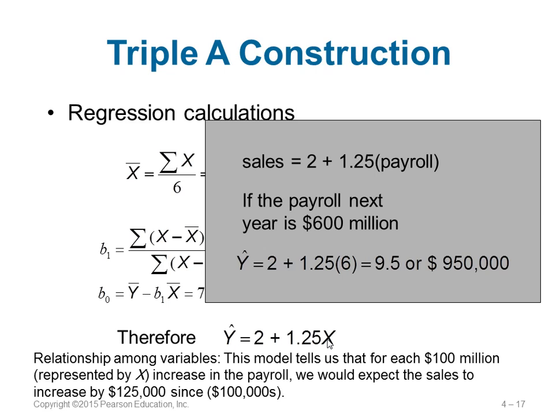In our equation ŷ = 2 + 1.25x, x is the payroll and y is the sales. If there is an increase in payroll, then there will be a 1.25 times increase in sales. For example, if there is a 100 million increase in payroll, that means there will be 125 million increase in sales — just multiply them.